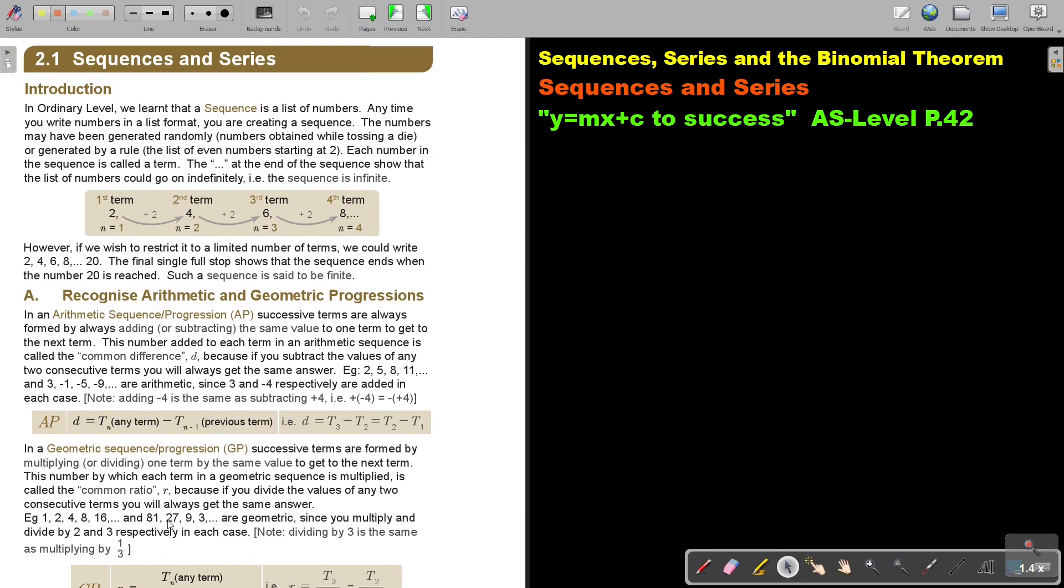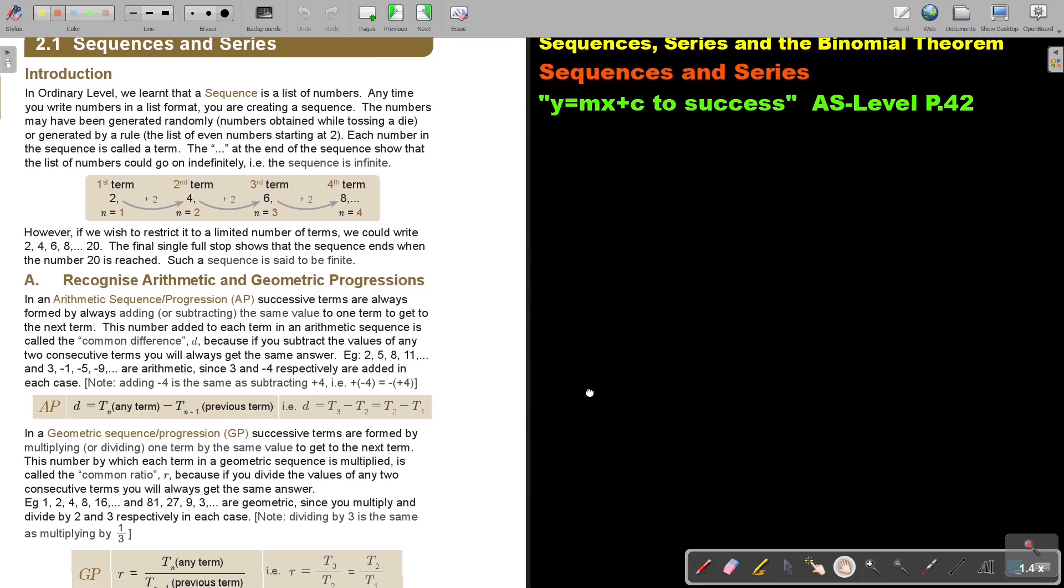And then the same here. If you do this one, you will every time get a third. 27 divided 81 or 9 divided 27 or 3 divided 9 are geometric since you multiply and divide by 2 and 3 respectively in each case. Now, dividing by 3 is the same as multiplying by a third.